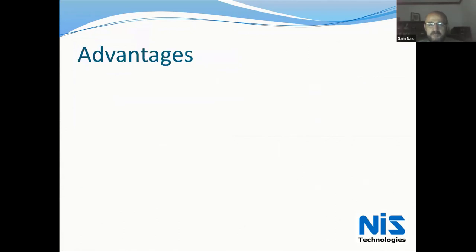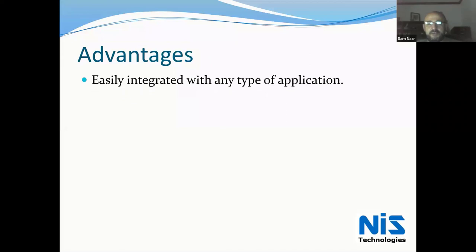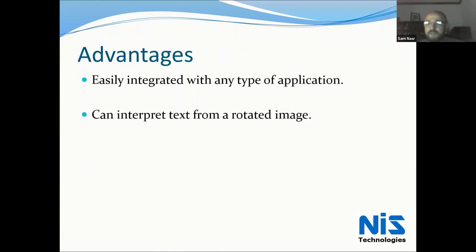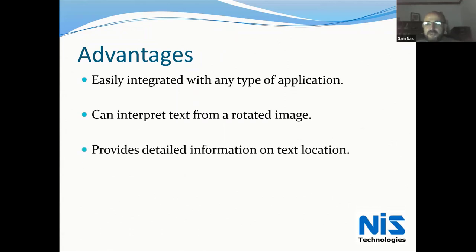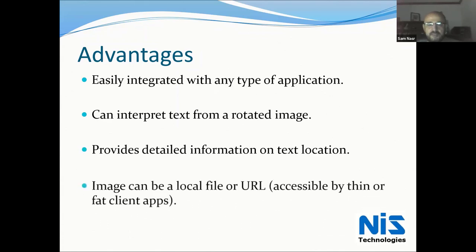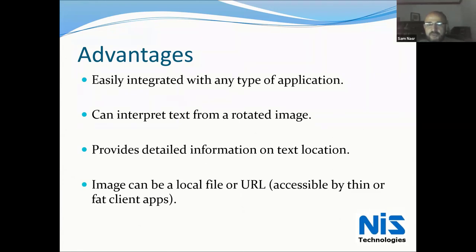Some advantages to highlight: it's easily integrated with any type of application — console apps, forms applications, web apps. For OCR, it can interpret text from a rotated image and provides detailed information on where the text is located. When uploading an image, it can be something stored on a hard drive or a URL pointing to an external location.